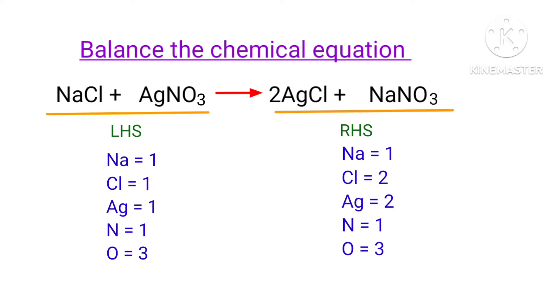In this equation, we need to balance the chlorine atoms first. To do this, we need to put a coefficient of 2 in front of NaCl.